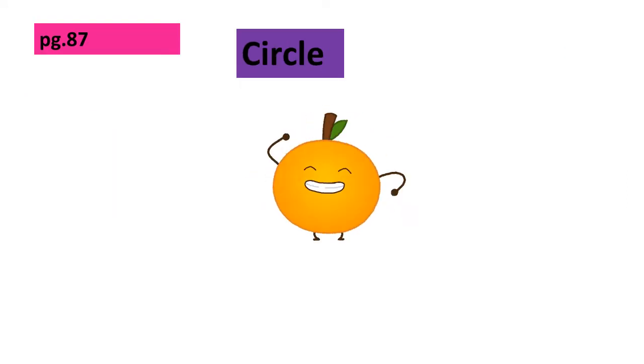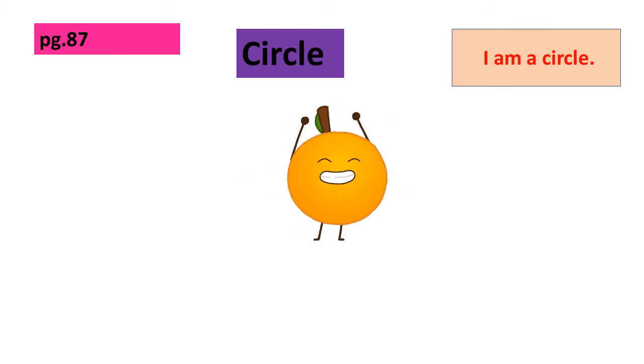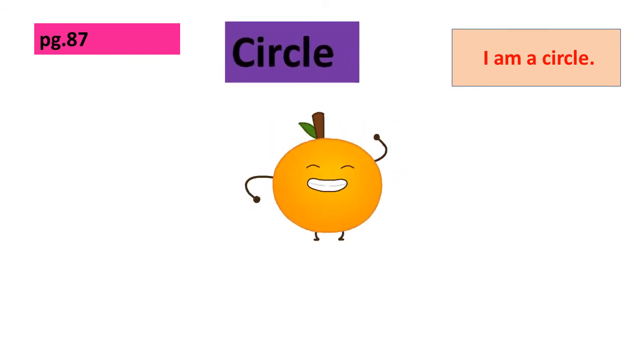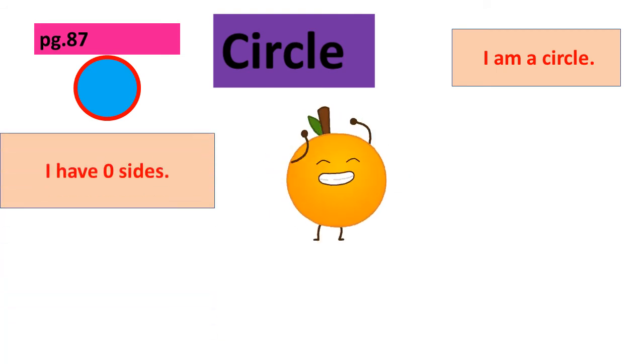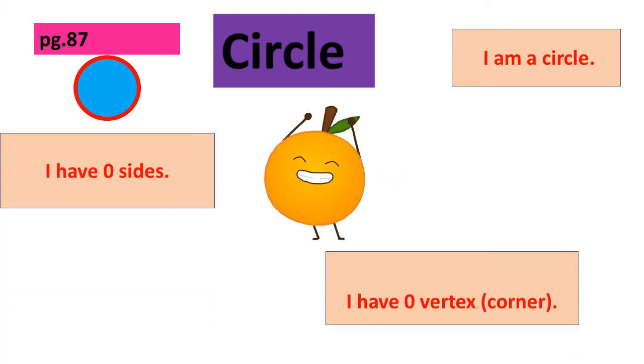Now, what is this? Yes, this is a circle. It says I am a circle. Dear students, a circle has zero sides and zero vertices.